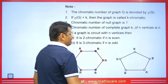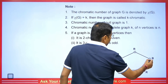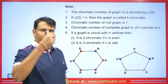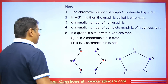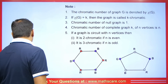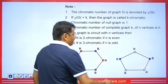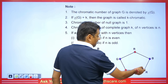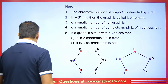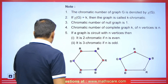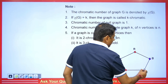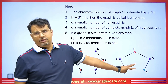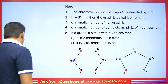For an odd circuit, if I take one color here and another there, I cannot reuse the same color for the connecting vertex. Since the vertices connect in a way that forces a third color, we need three colors. When we add one more color for the odd vertex, the graph becomes odd and results in a three chromatic graph.